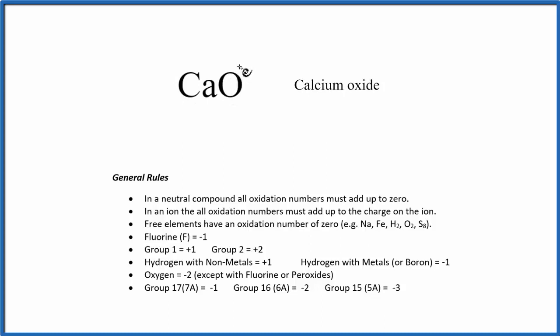So calcium oxide, that's a neutral compound. There's no plus or minus up here, like you'd see with ions. So with a neutral compound, all the oxidation numbers add up to zero. That'll help us figure out the oxidation numbers and make sure we're correct with CaO.